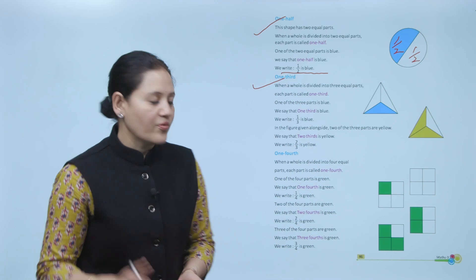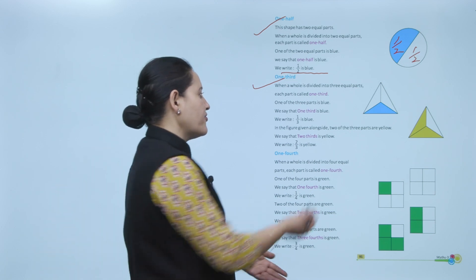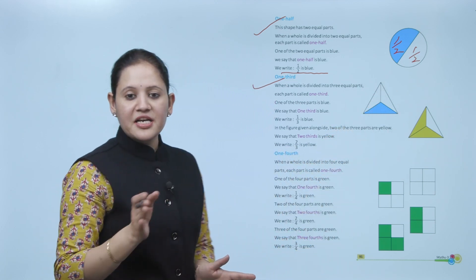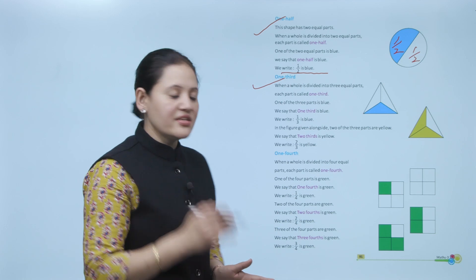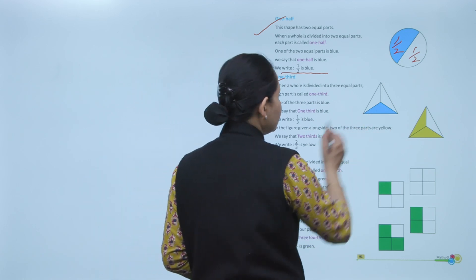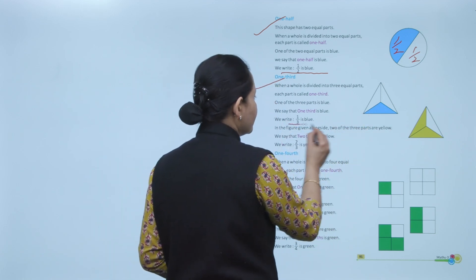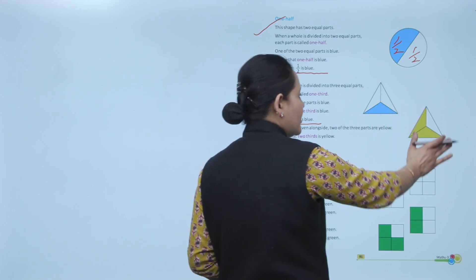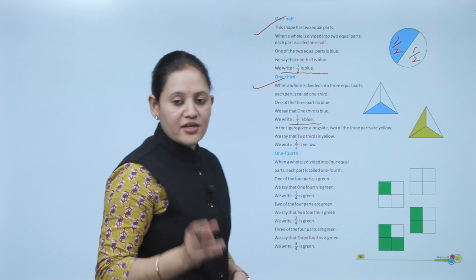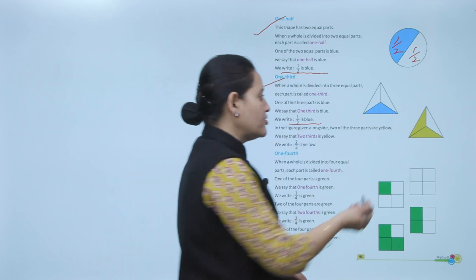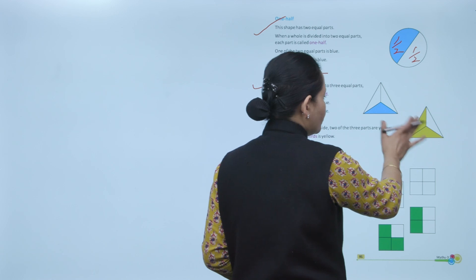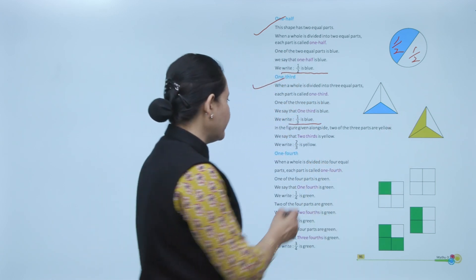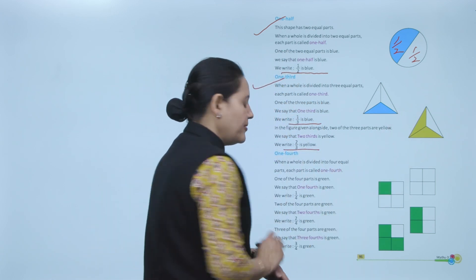Here the figure is divided into 3 equal parts, so each part represents 1 by 3. One part is shaded, so we say 1 third is blue. Here again, divided into 3 equal parts, out of that 2 are colored yellow, so these two parts represent 2 by 3, or 2 thirds.